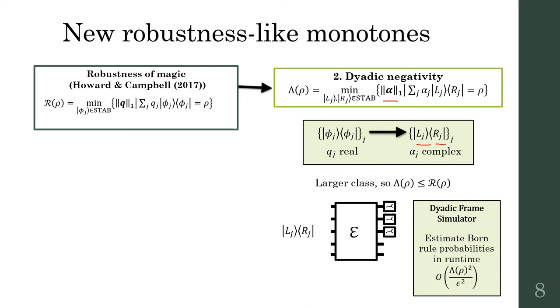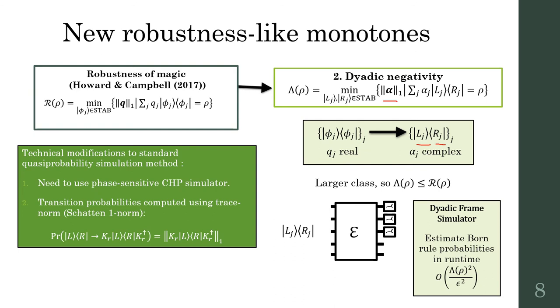We show in the paper that this leads to a classical simulator, the dyadic frame simulator, where we sample a dyad and propagate through the circuit. There are a couple of technical hurdles to overcome. Briefly, since dyads can be non-Hermitian and coefficients are complex, we need to track the phase as the dyad is updated through the circuit. We need to use more modern CHP Clifford simulators rather than the standard stabilizer tableau method. Second, we cannot use the standard Born rule to compute intermediate transition probabilities for non-unitary operations. Using the Schatten 1-norm, we can still obtain an unbiased estimator.